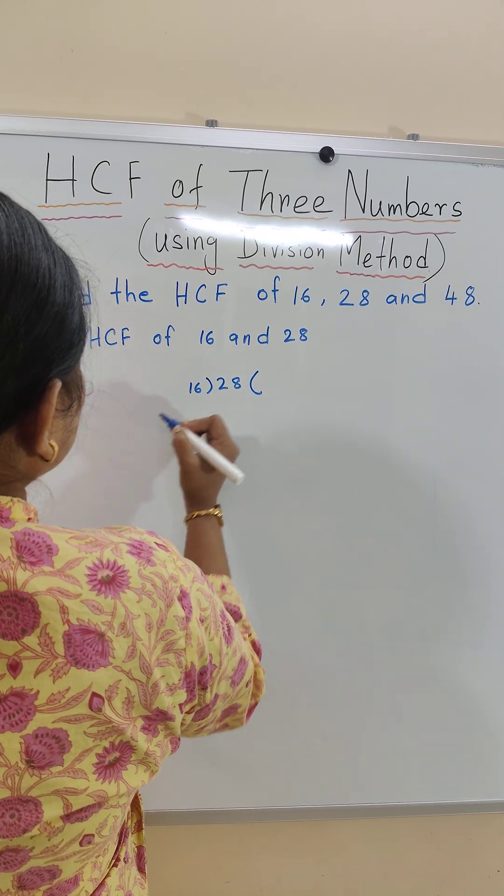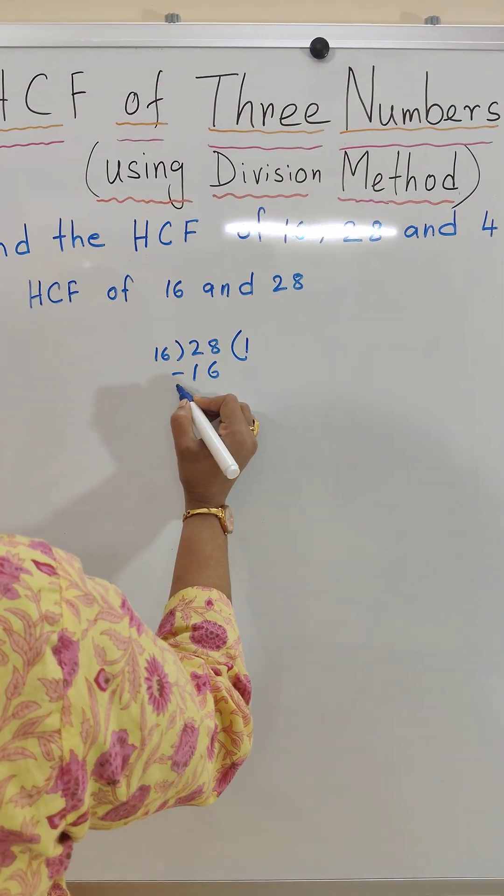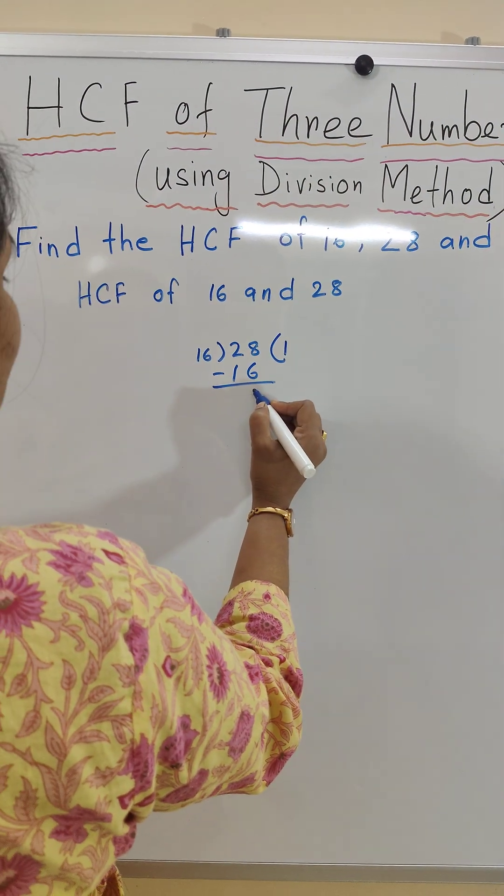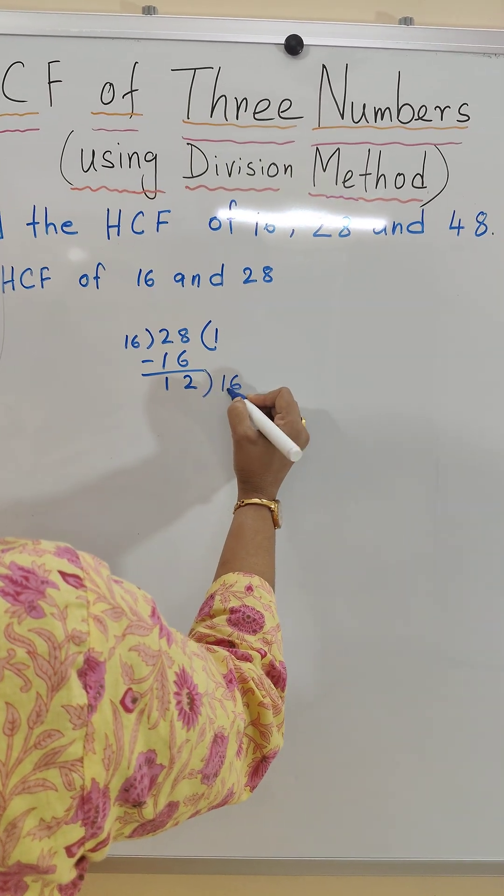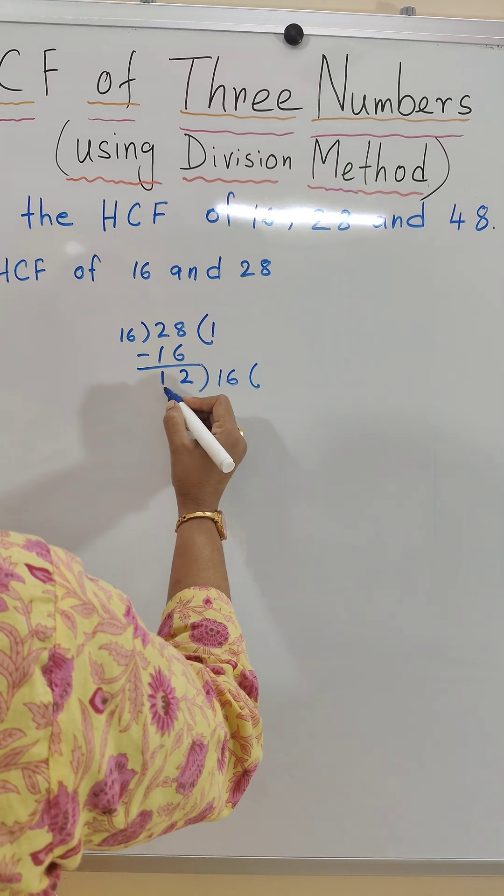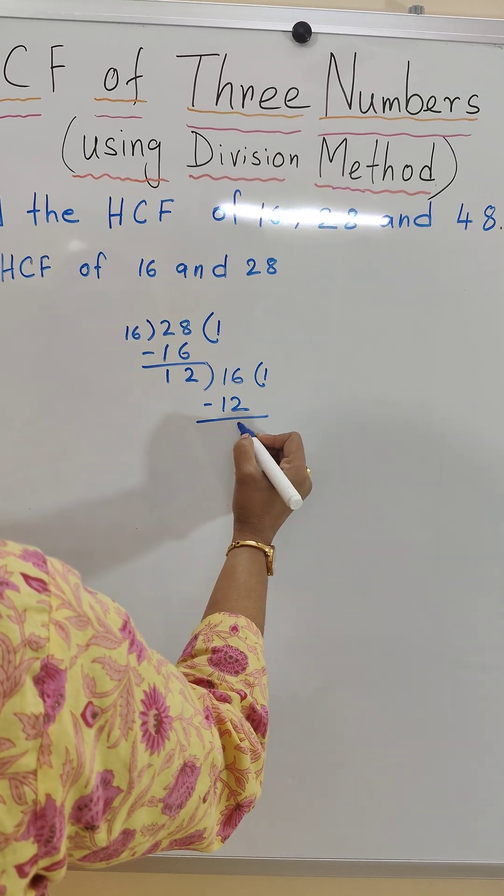So we will divide 28 by 16. 16 times 1 is 16. We get the remainder 12. Now we will divide 16 by 12. 12 times 1 is 12.